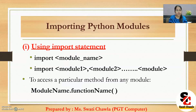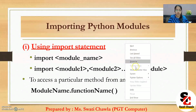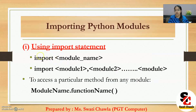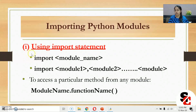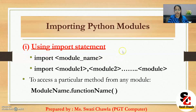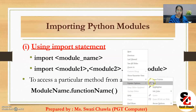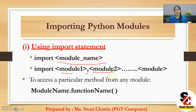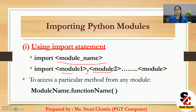Now, how to import Python modules? There are multiple methods to import a Python module. The first one is using the import statement. The syntax is: import and then module name. Suppose I want to import the math module — I write 'import math'. If I want to import multiple modules in a program, just write multiple module names comma-separated: import math, random.